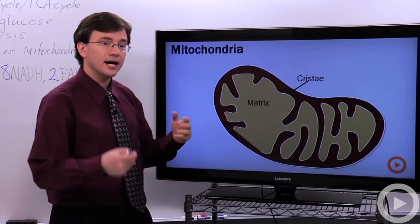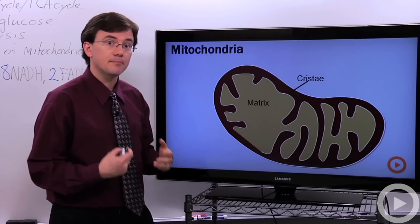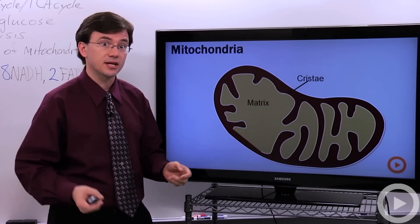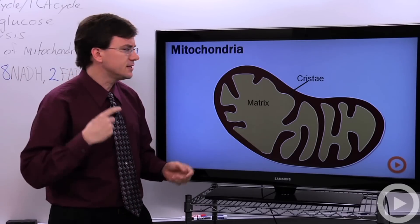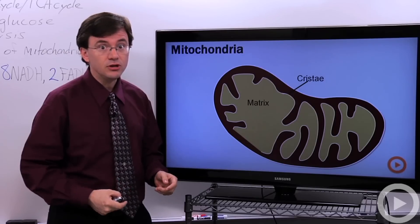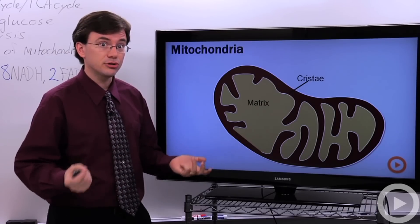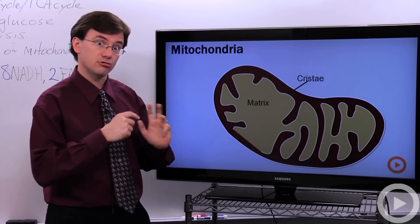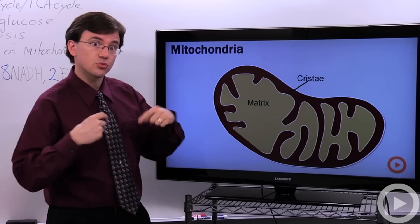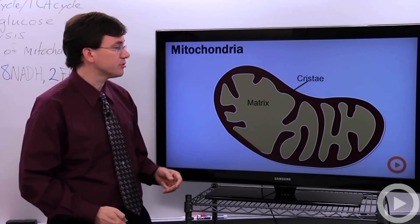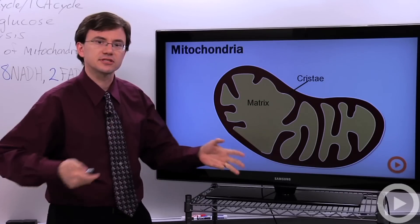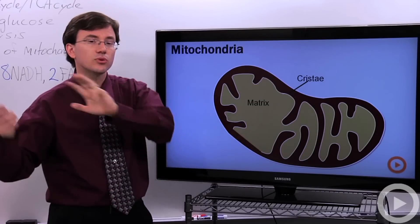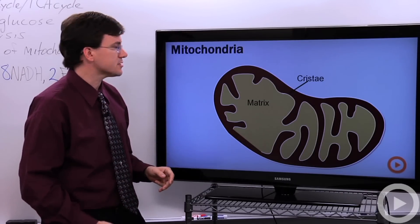This is why I tend to prefer talking about the Krebs cycle — the matrix. Ever seen that movie? Who starred in it? Keanu Reeves — KR — Krebs cycle. The Krebs cycle happens in the matrix. It's one of those little memory tricks or mnemonics that'll help you recall which cycle happens in the matrix of the mitochondria versus what happens in the chloroplast during photosynthesis.